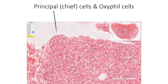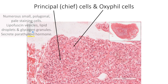Two types of cells are seen in parathyroid gland: principal cells or chief cells, and oxyphil cells. Principal cells are the most numerous. These are small polygonal pale-staining clear cells with a central nucleus. Cytoplasm contains lipofuscin vesicles, lipid droplets, and abundant glycogen granules.